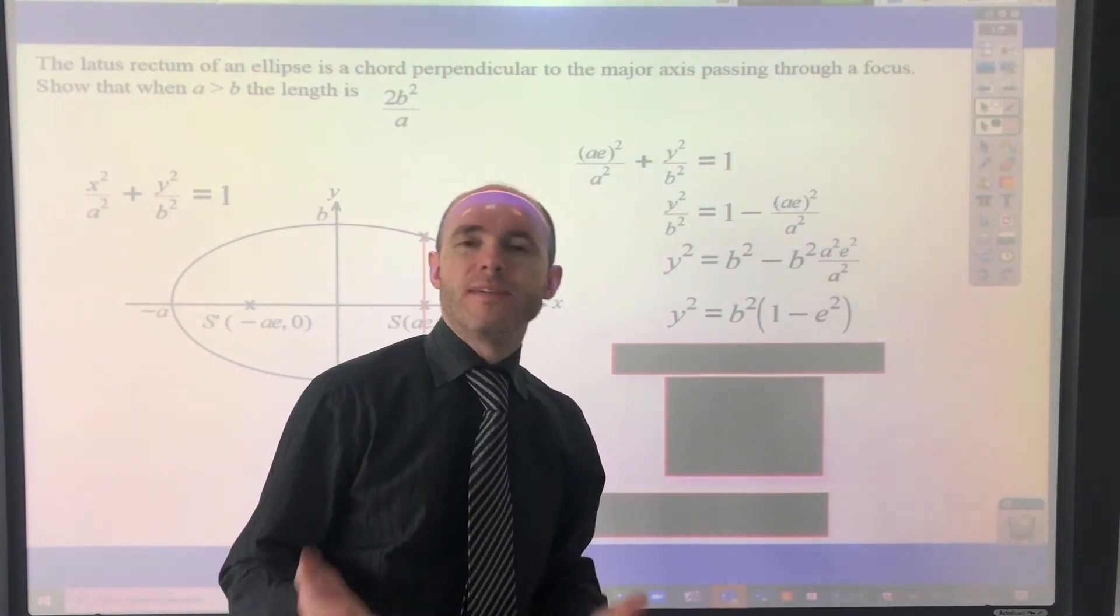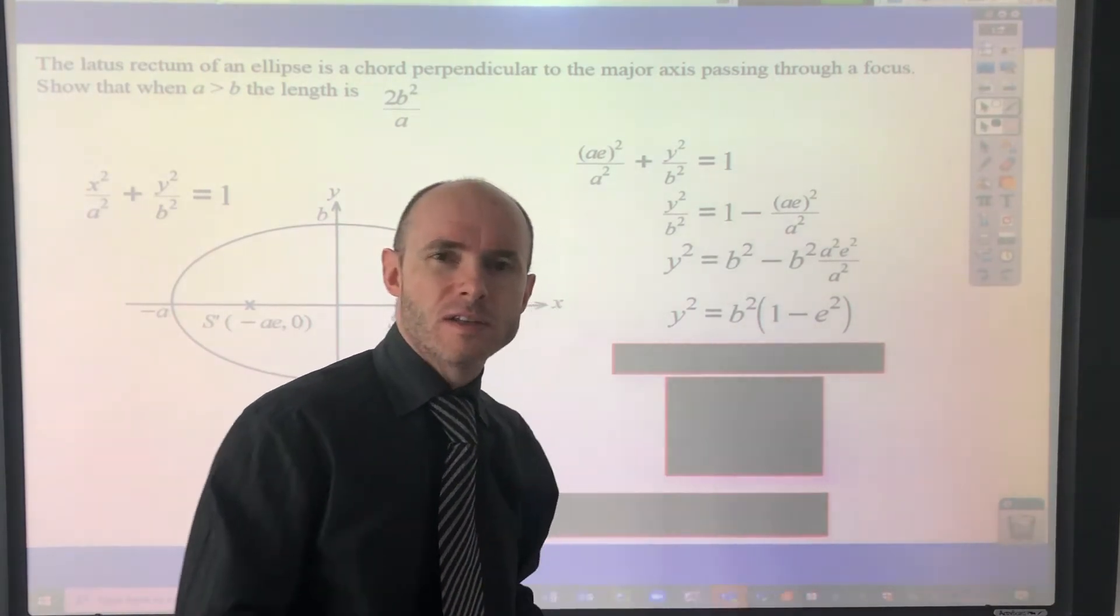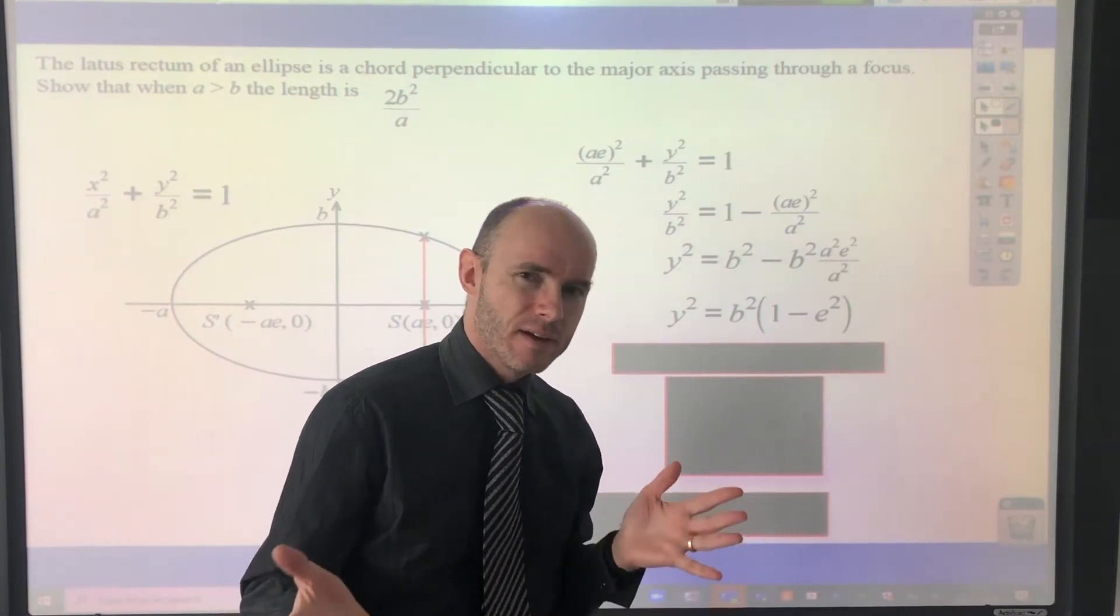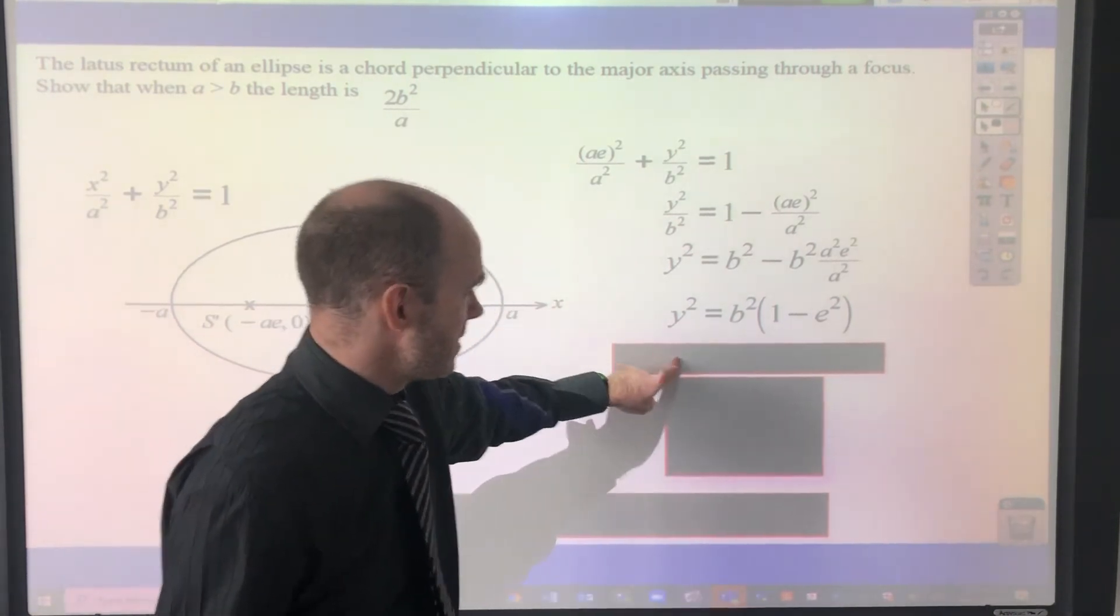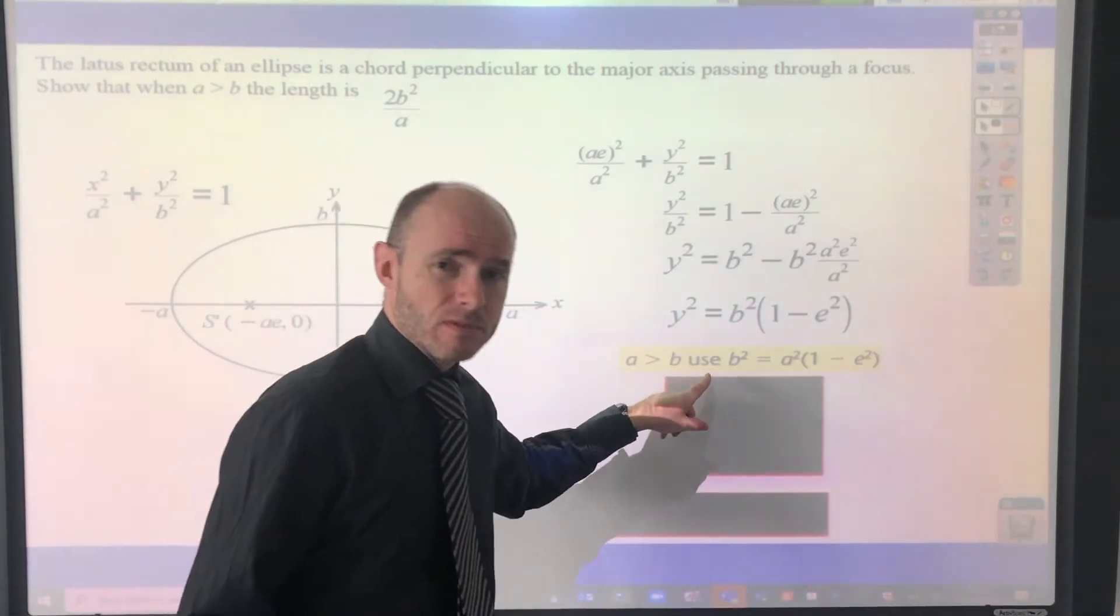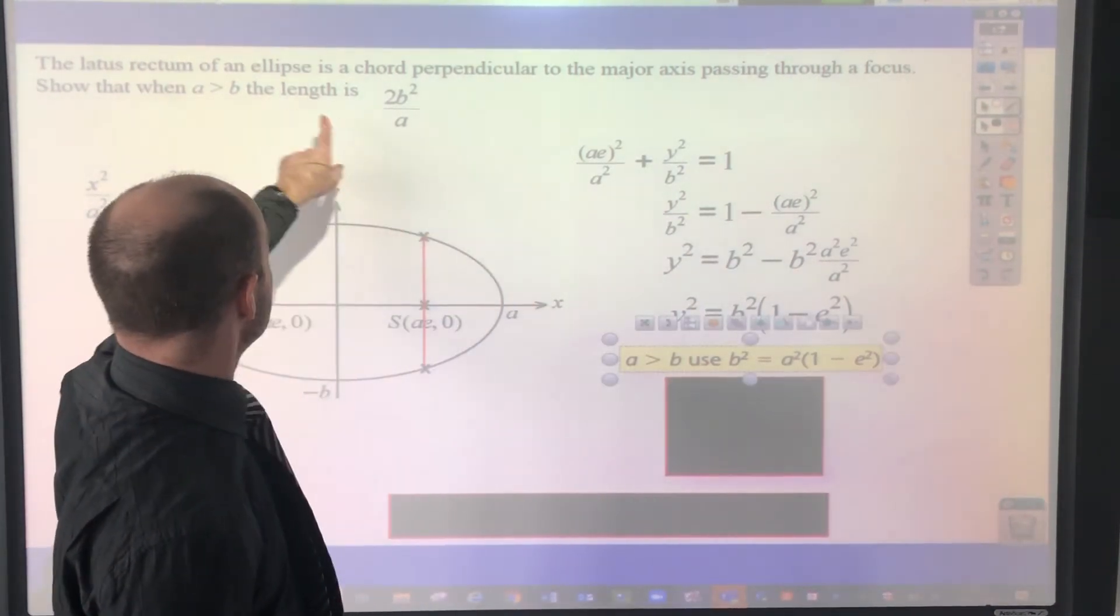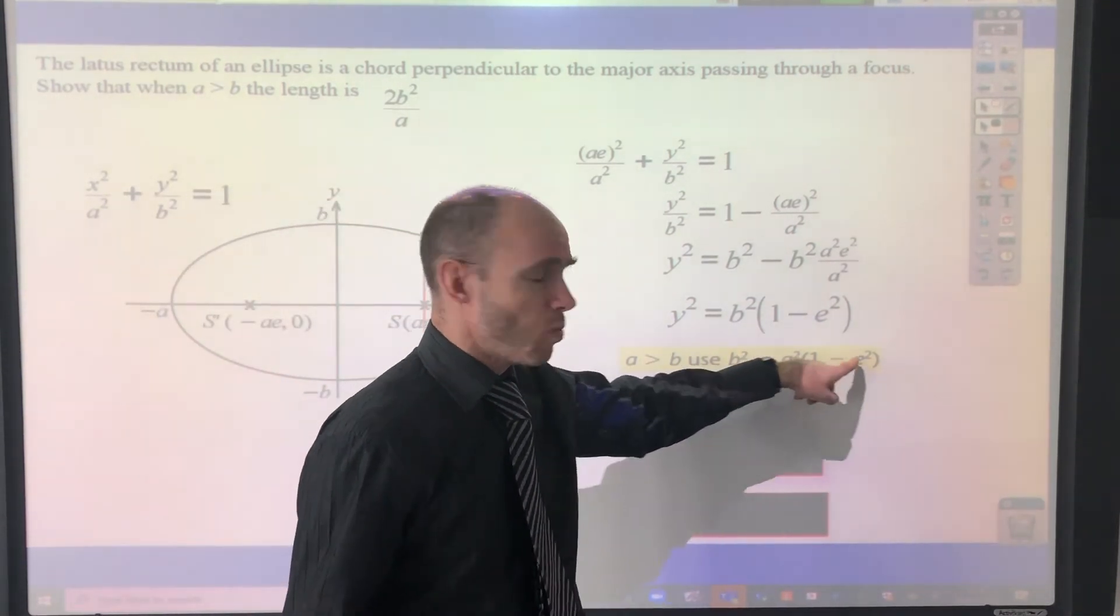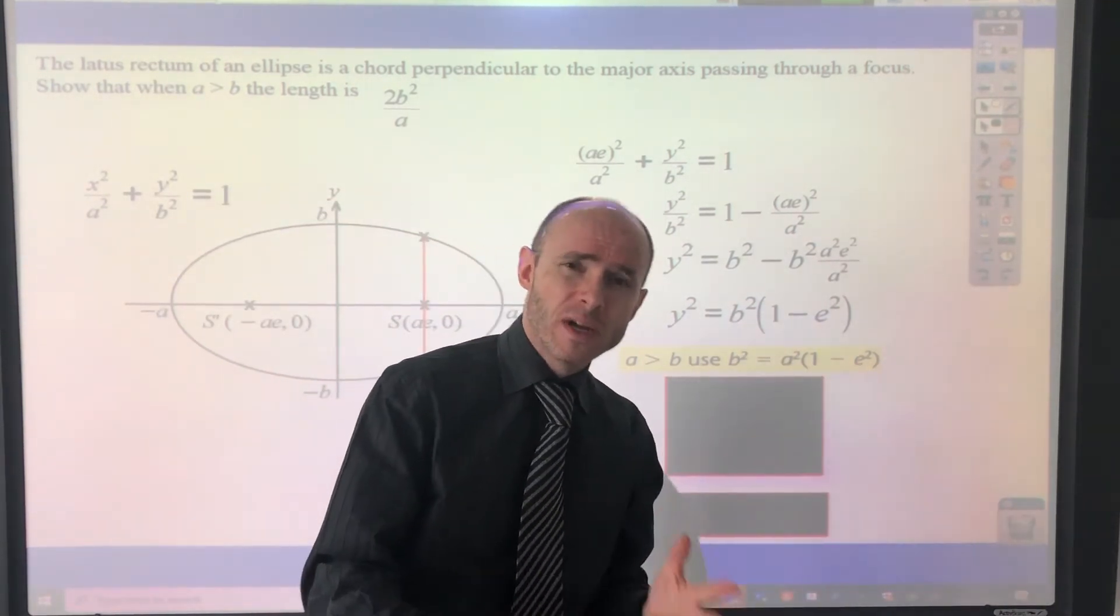Maybe you got up to that point and then were a little bit stuck. And you just started to play the video to see what's going to happen. Well, I'm just going to give you a hint, if you want to work through this yourself. The hint is you need to use that result there. Remember that? For this particular case, when a is greater than b, you can use b squared equals a squared, one minus e squared. Maybe pause the video and have another go. There's not much to it, as you can see.